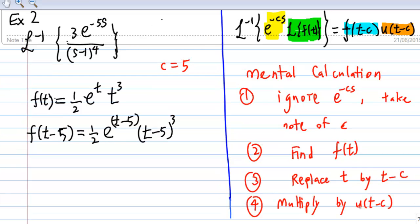And the final step is multiply by u of t minus c, where c is equal to 5. Therefore, the final answer is equal to f of t minus 5, which is 1/2 e to the power t minus 5 times t minus 5 to the power 3 times u of t minus 5.